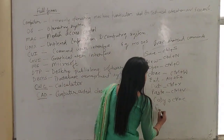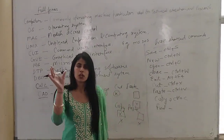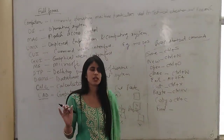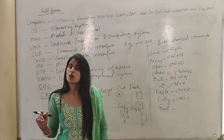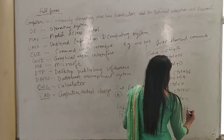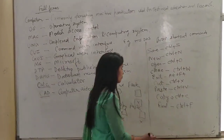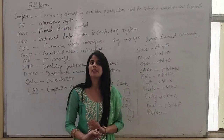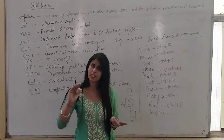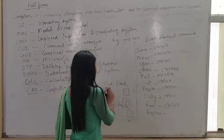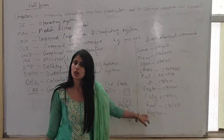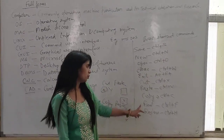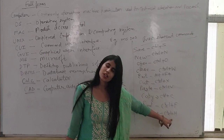Next is Find. Suppose you have a document file and you are searching for a specific word but can't find it — use the shortcut Control+F. Next is Replace. It means replacing existing data with new data. Suppose a word X is there and you want to replace it with Y — use Control+H. To find data: Control+F. To replace data: Control+H.